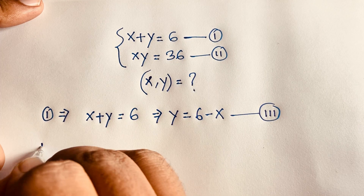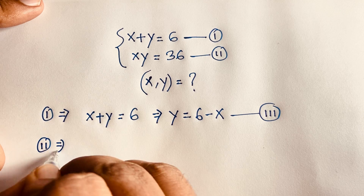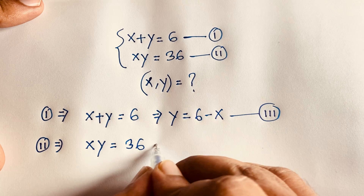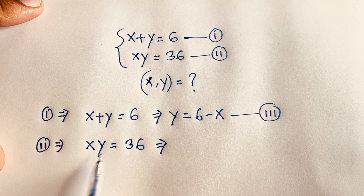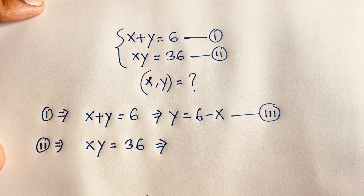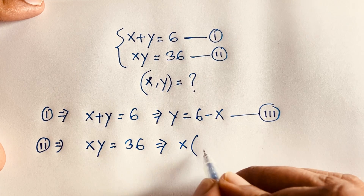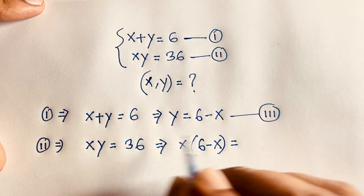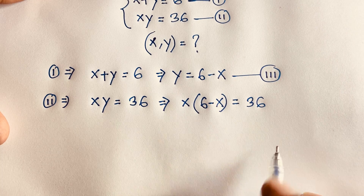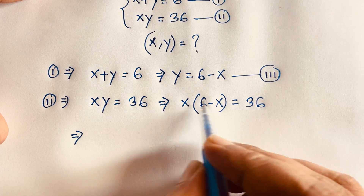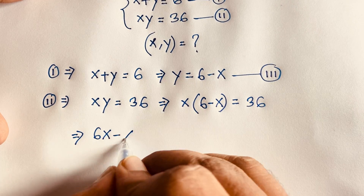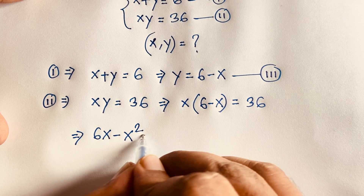Now if we follow our second equation, xy is equal to 36. In this equation, y is equal to 6 minus x. So if you put this value in this equation, it will be x times (6 minus x) is equal to 36. Then in this expression, 6 times x is 6x, minus x times x is x squared, so we get 6x minus x squared equals 36.